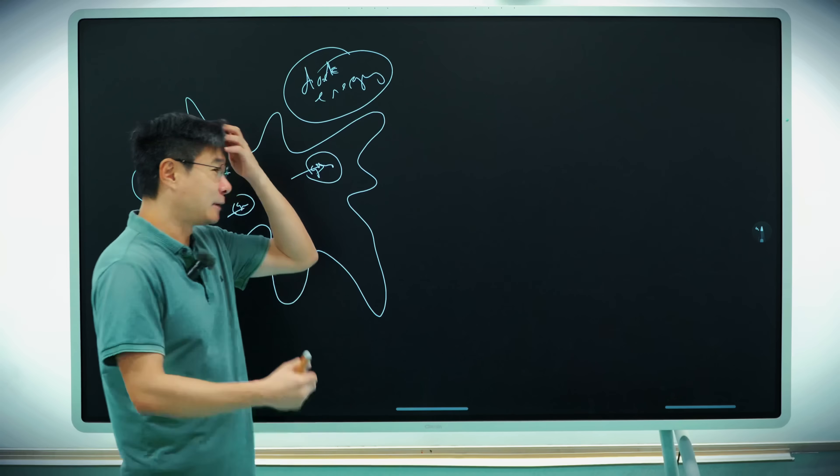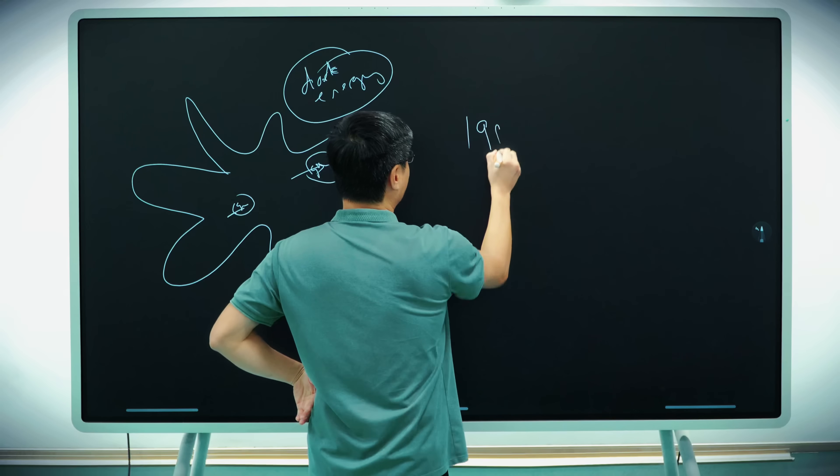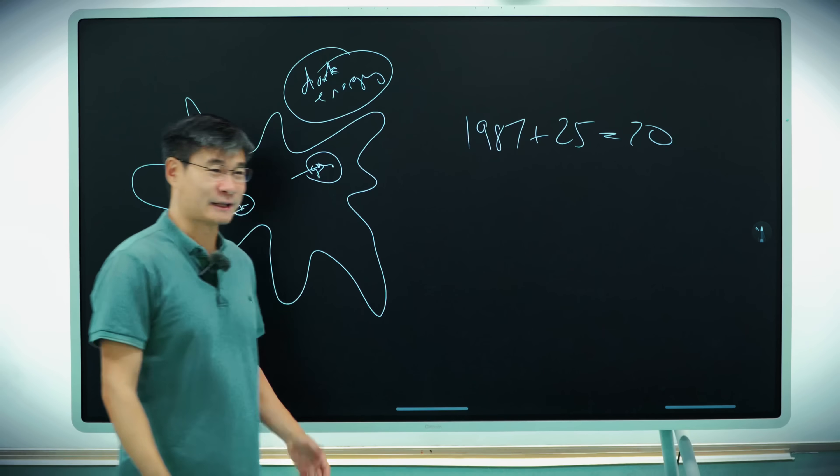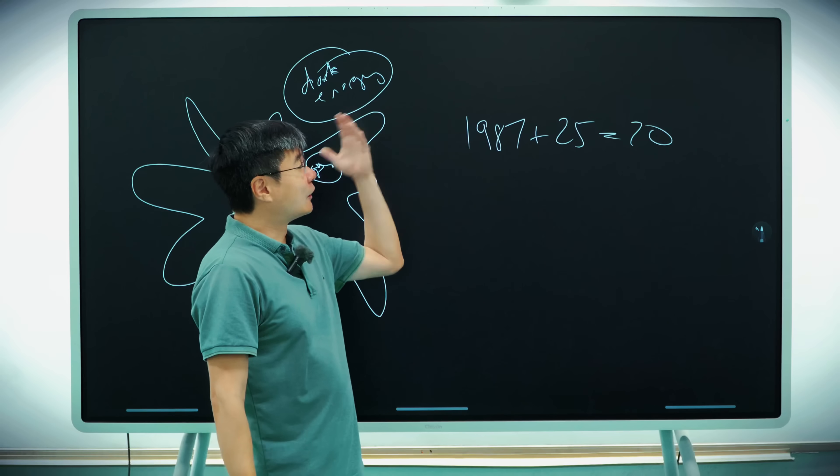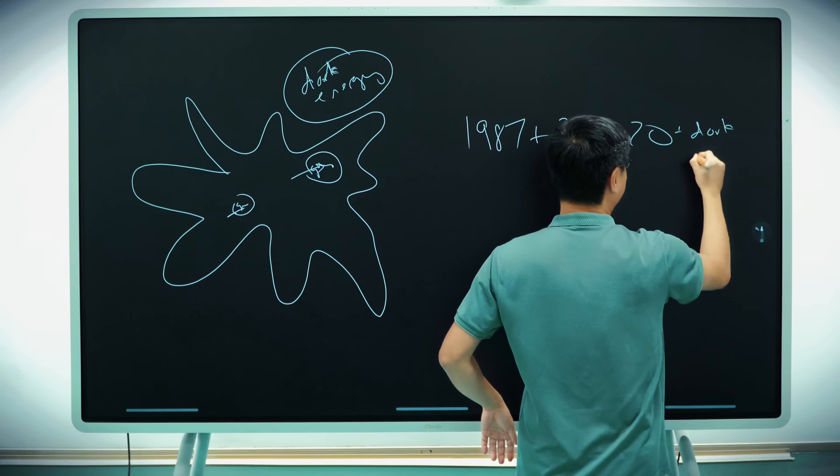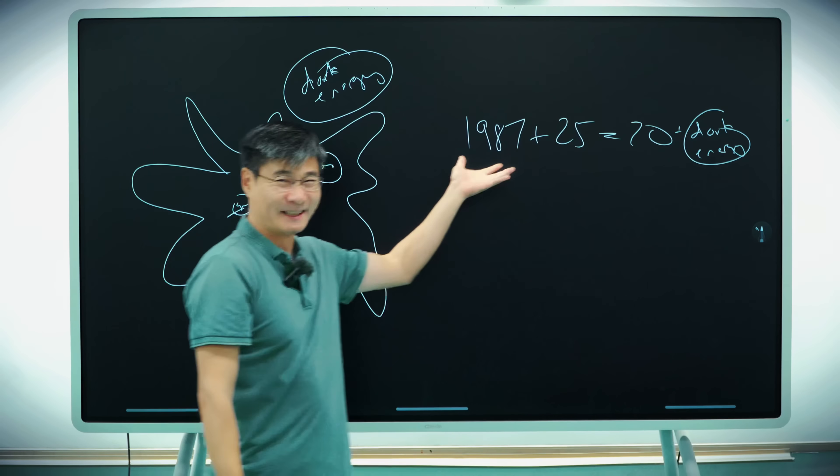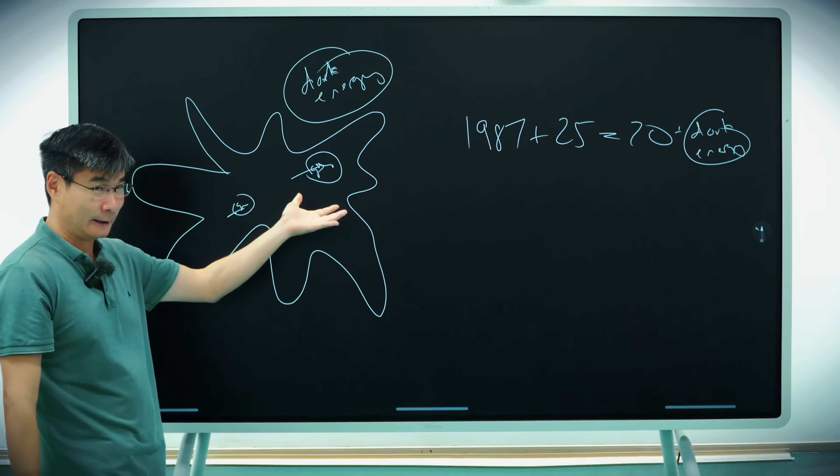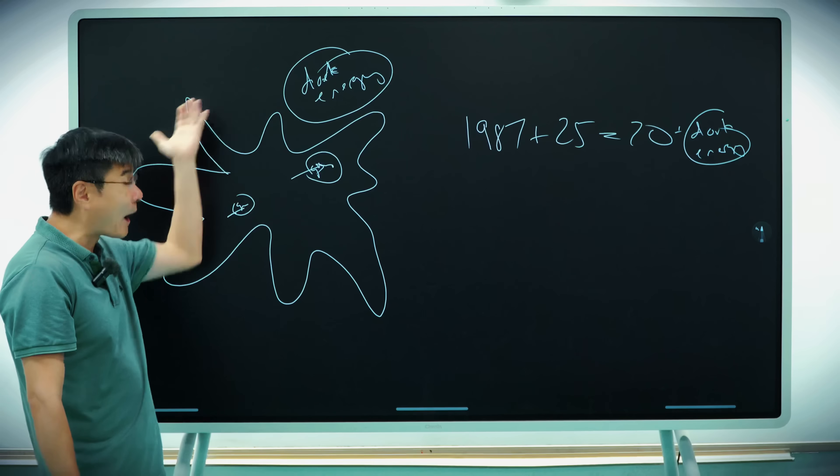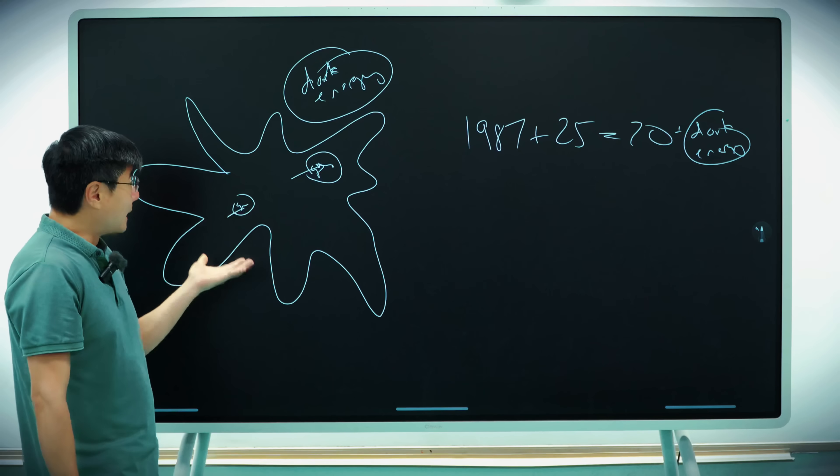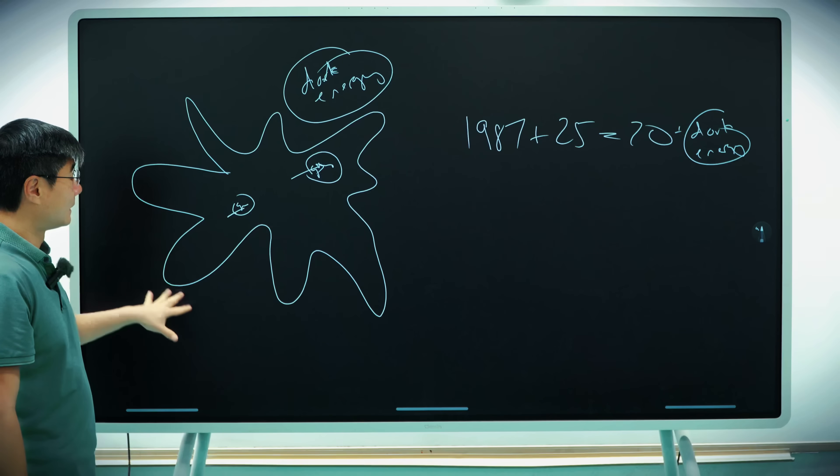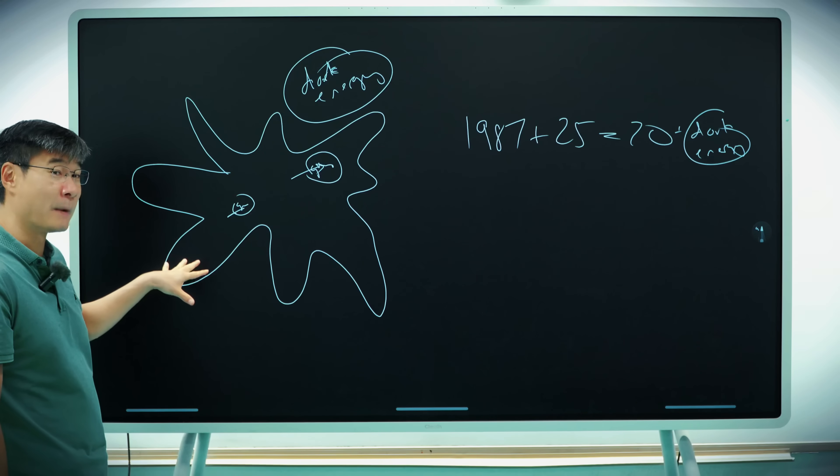So let me give you an example. Let's just say you take a math test and the teacher asks you, 1987 plus 25. And your answer is 20. That's obviously wrong. So your teacher says, this is wrong. And then you say, oh, I know how to fix this. Plus dark energy. Problem solved. This is literally what cosmologists are doing with dark energy.